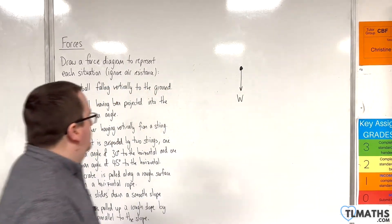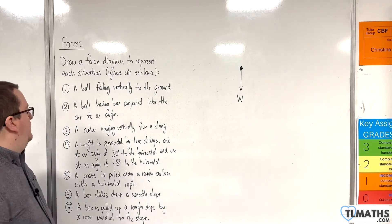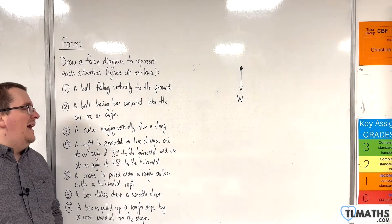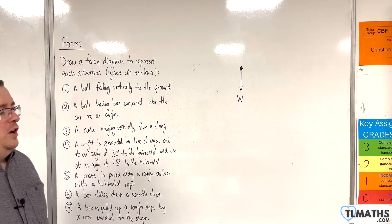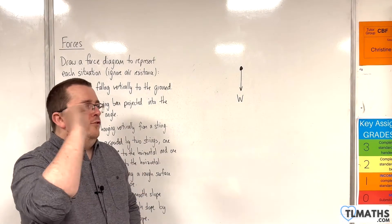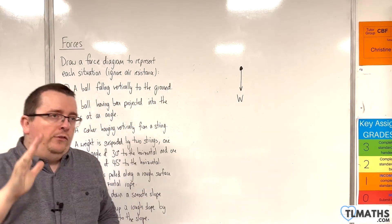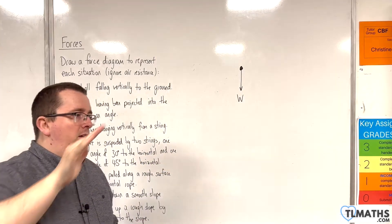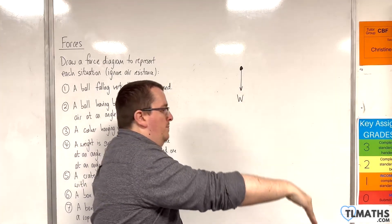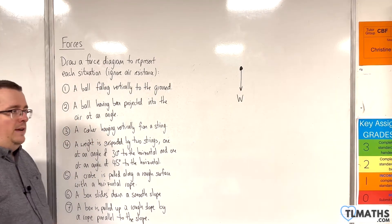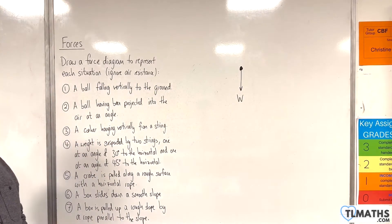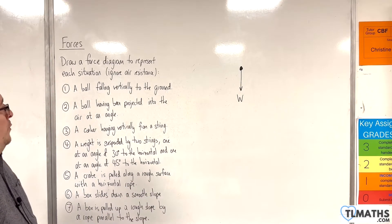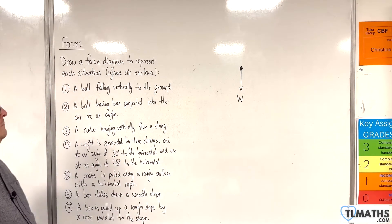Number two: a ball having been projected into the air at an angle. We've thrown the ball, it's flying at an angle and it's going to make a parabolic motion down to the ground. While it's in the air, what forces are acting on the ball?